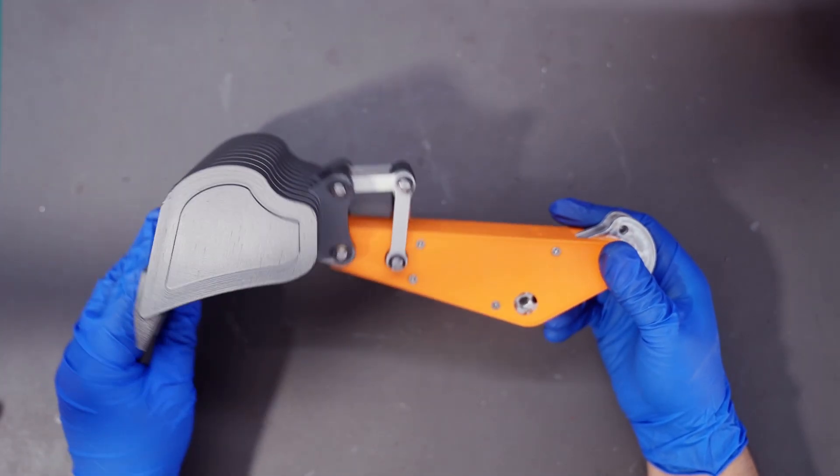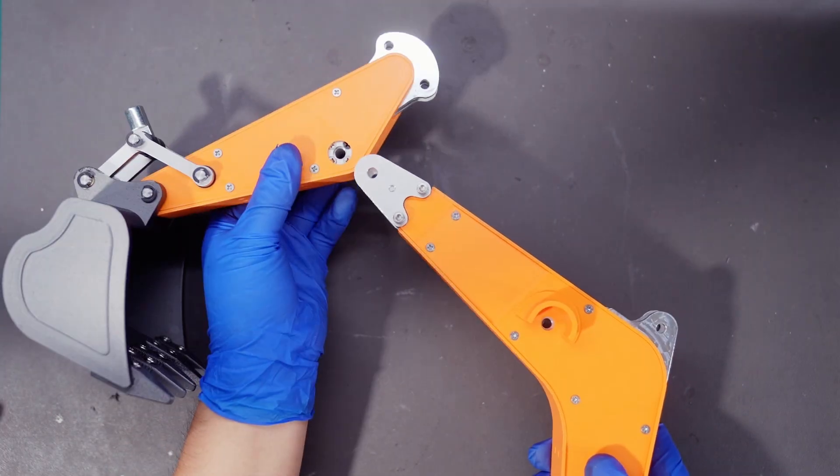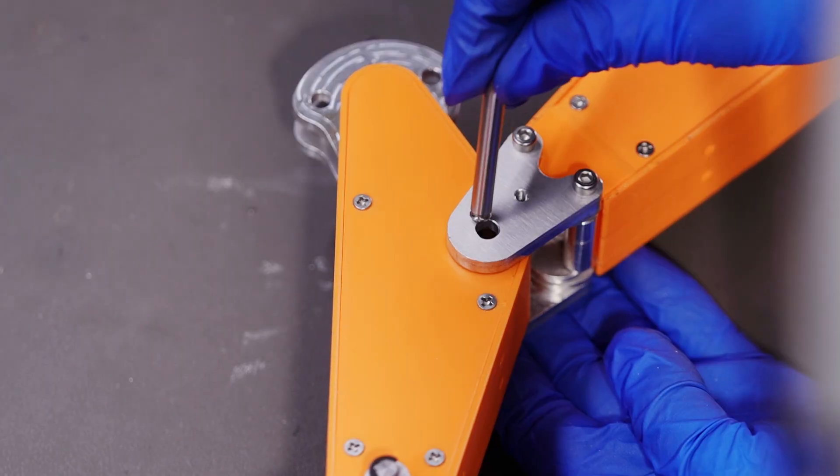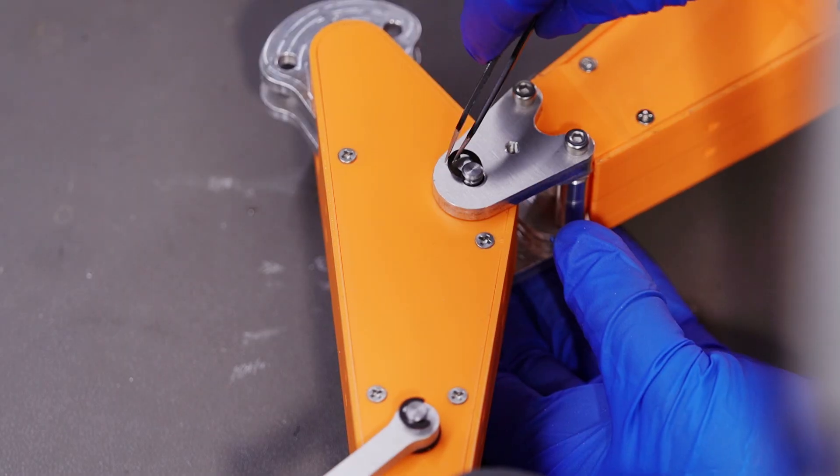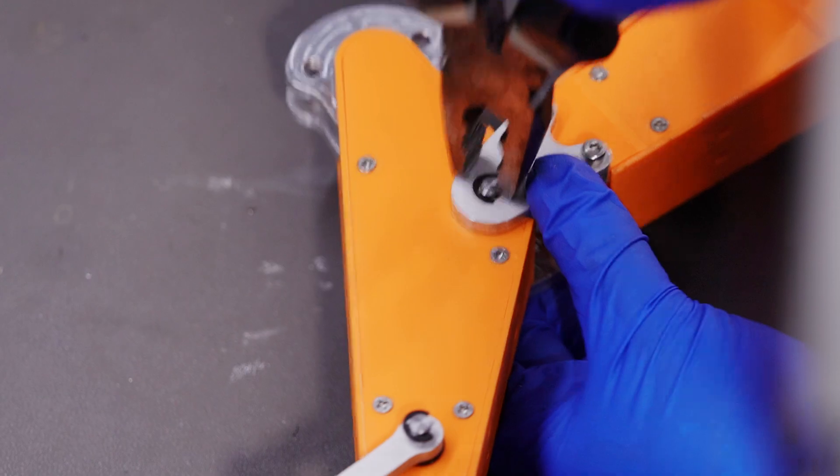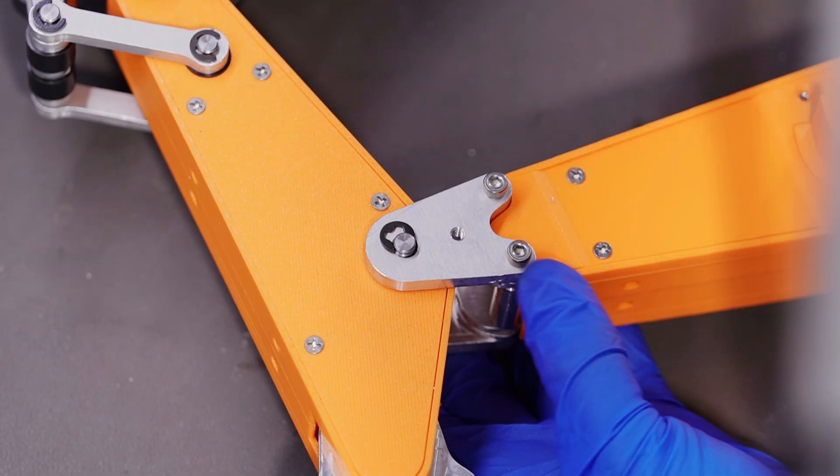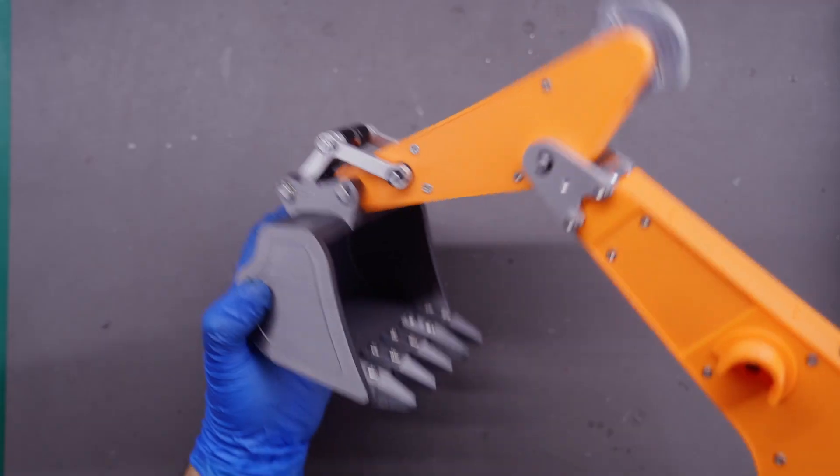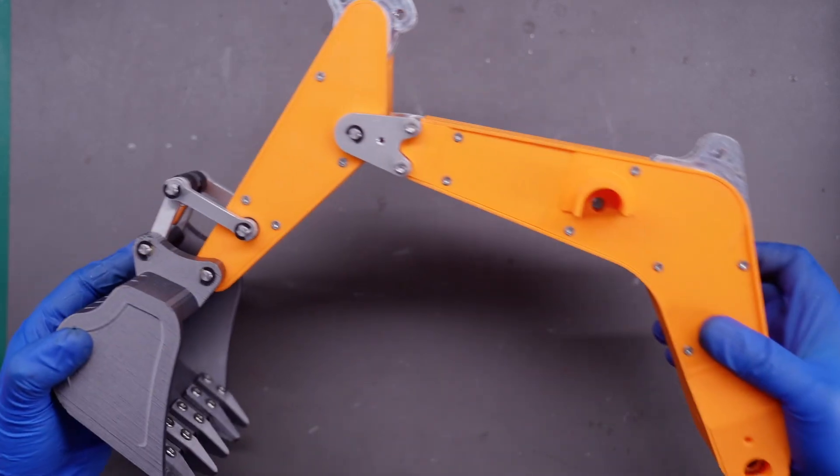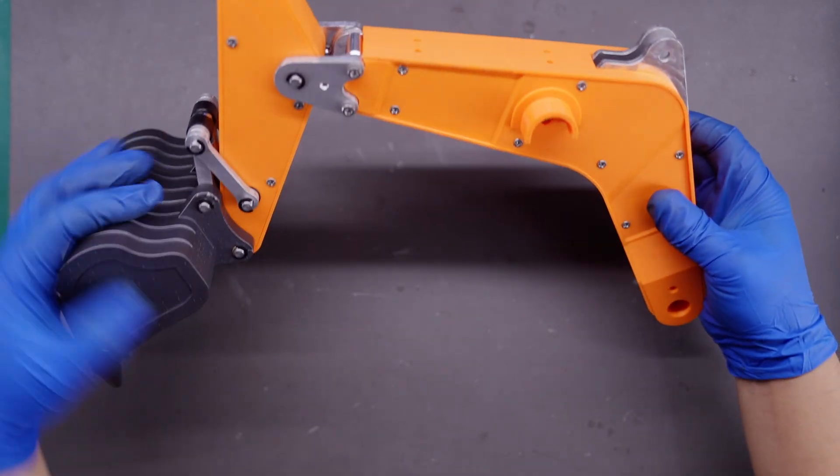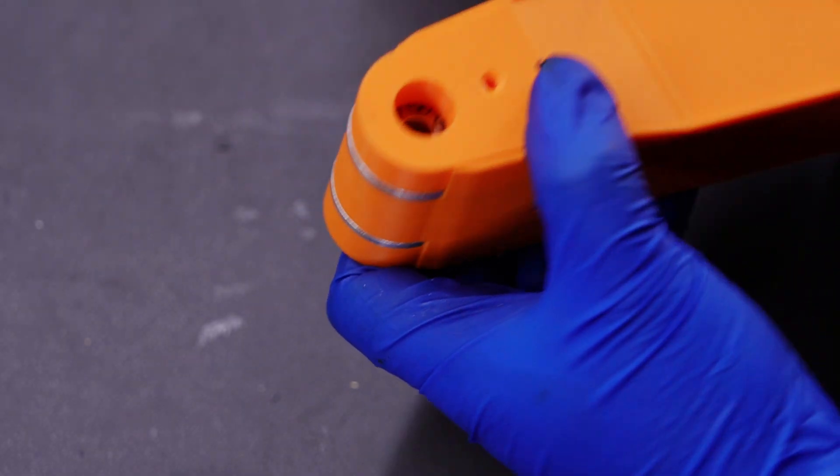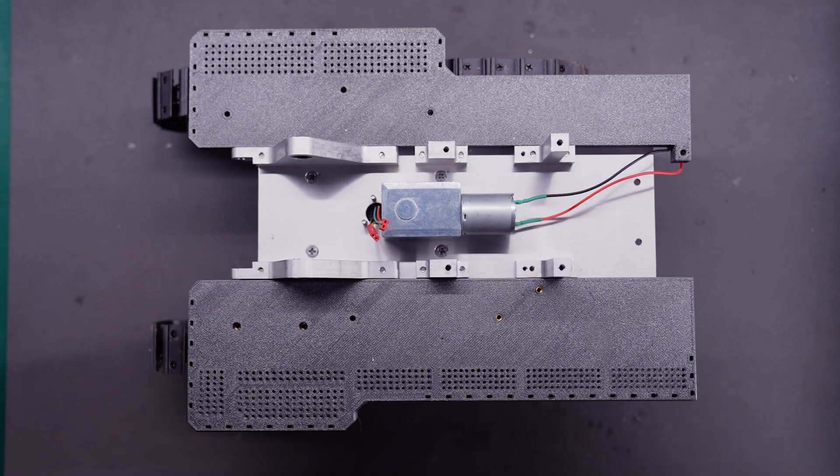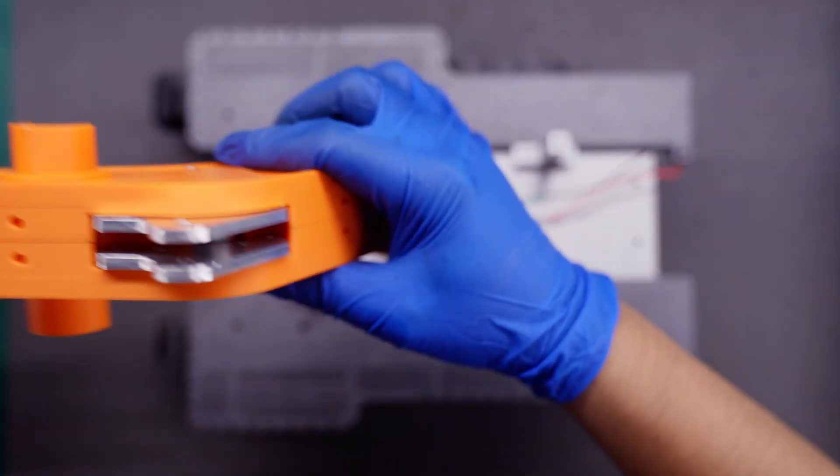After the bucket and stick are assembled, I'll connect the stick to the boom. Finally, I'll install the whole assembly onto the excavator's chassis.